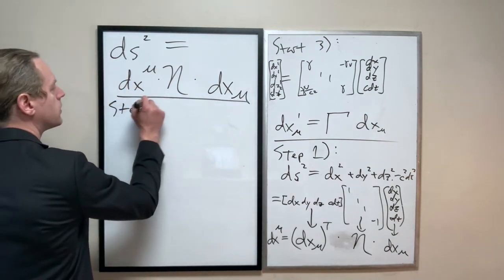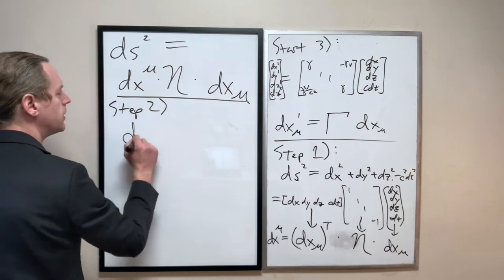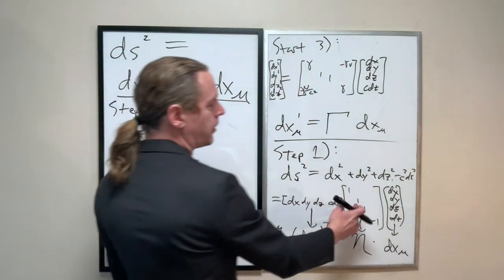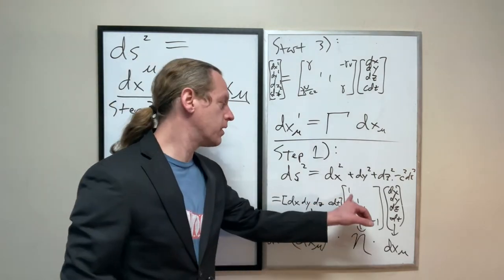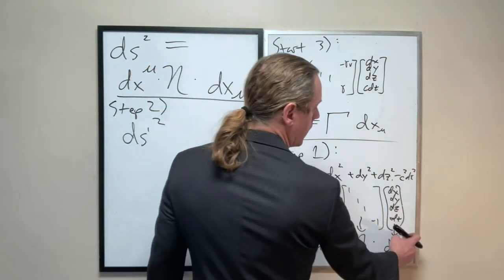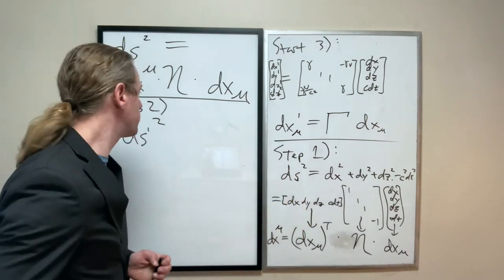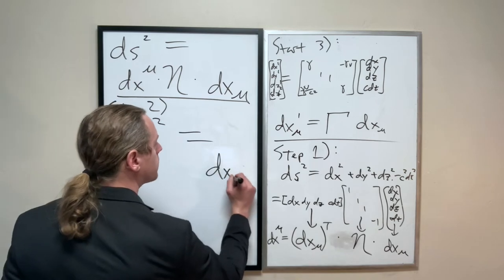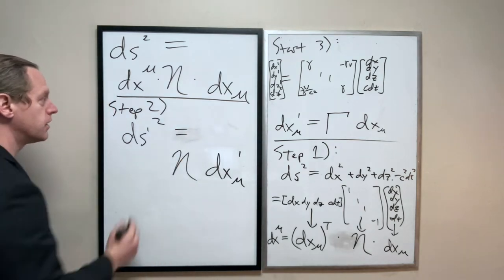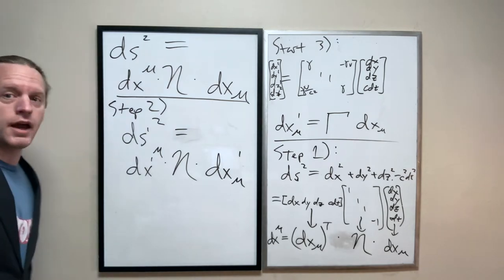So step 2. Now what I want to do is I want to do the same thing except ds prime squared. And the nice easy thing is that nothing about this Minkowski metric changes. When you go from one frame to the other, you don't change one into anything else. That matrix will always be the same. So all you do is you take that same space-time event differential right here, dx, dy, dz, c dt, and you just look at it from the prime frame. So really, this is just dx prime mu times eta, same thing, times dx prime mu upper. And do you see where we're going with this here?